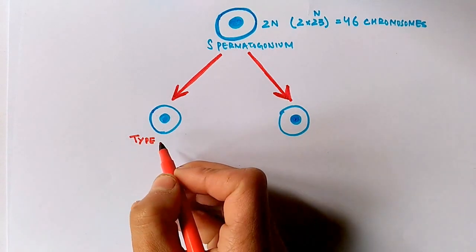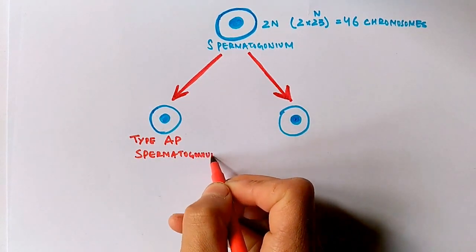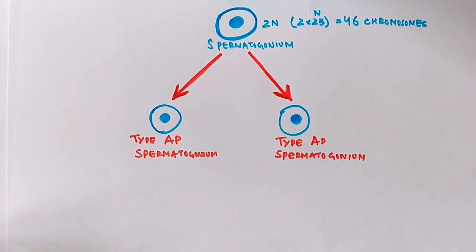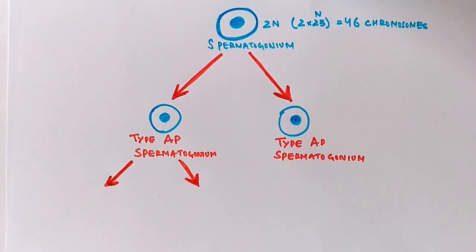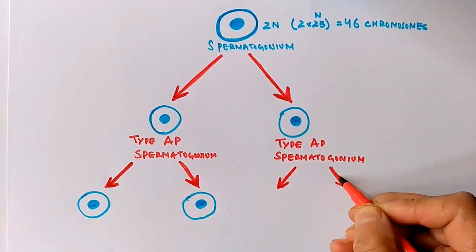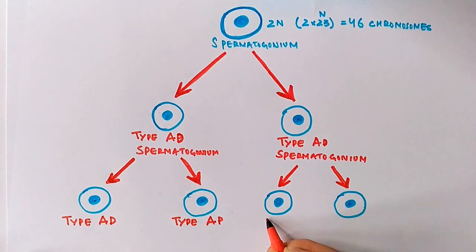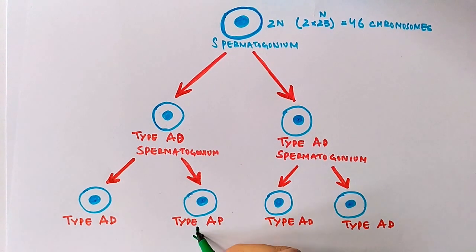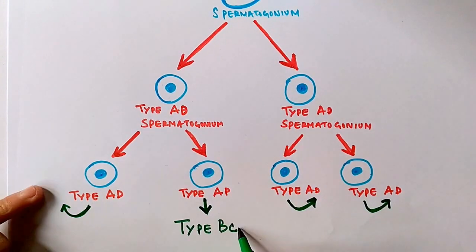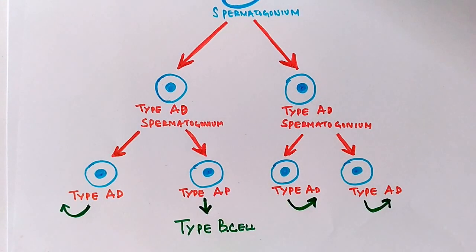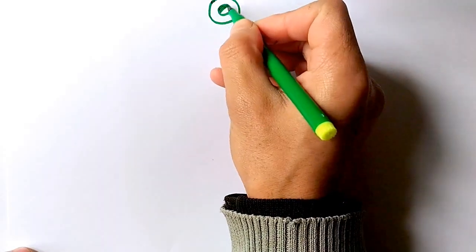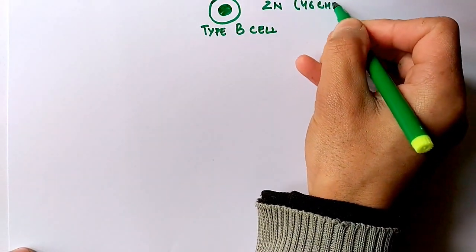The Ad-type spermatogonium has a dark nucleus, whereas the Ap-type has a pale nucleus. These cells further divide mitotically into Ad-type and Ap-type spermatogonium. The Ad-type recycles the pool, going back to the previous step to replenish the spermatogonium pool, while the Ap-type spermatogonium grows into the Type B cell.